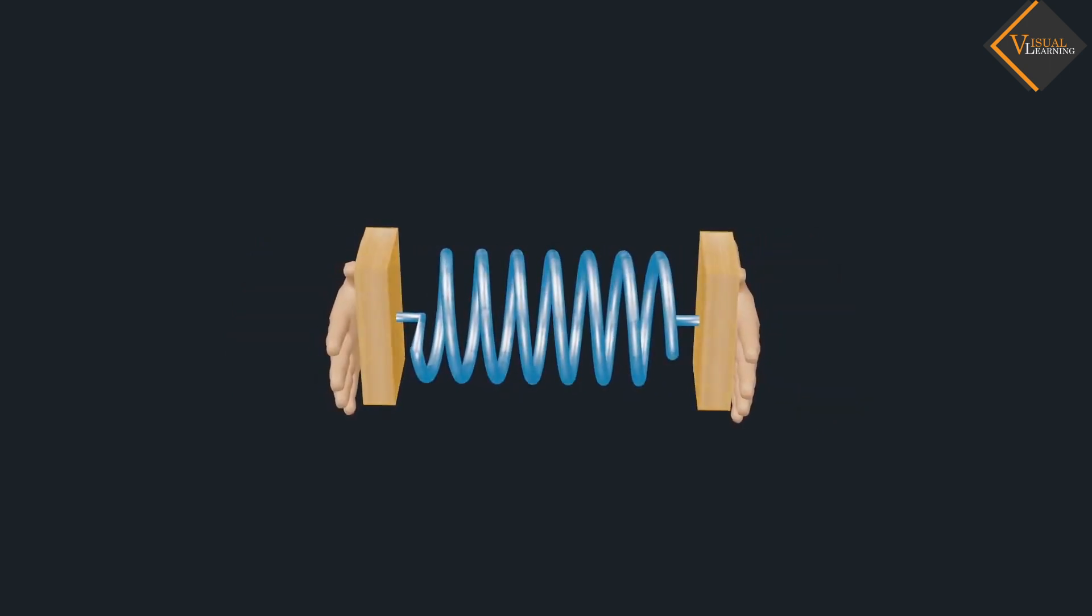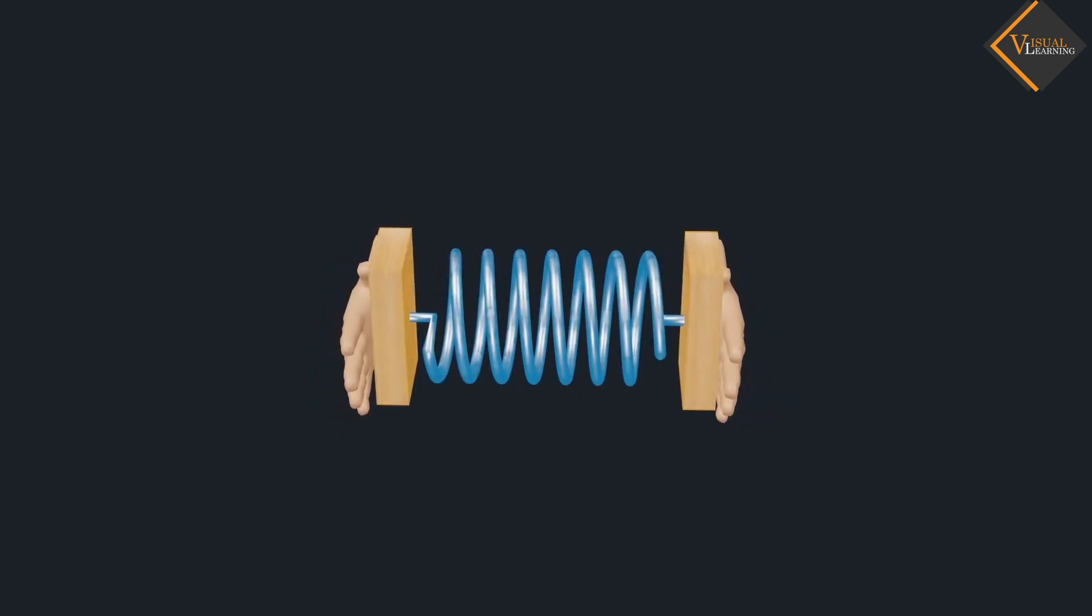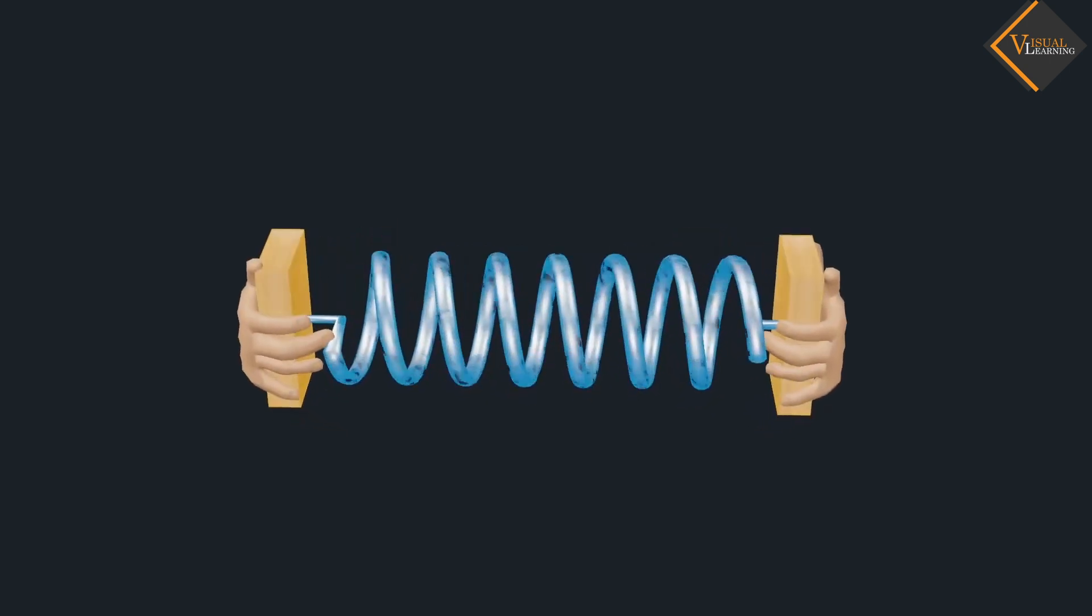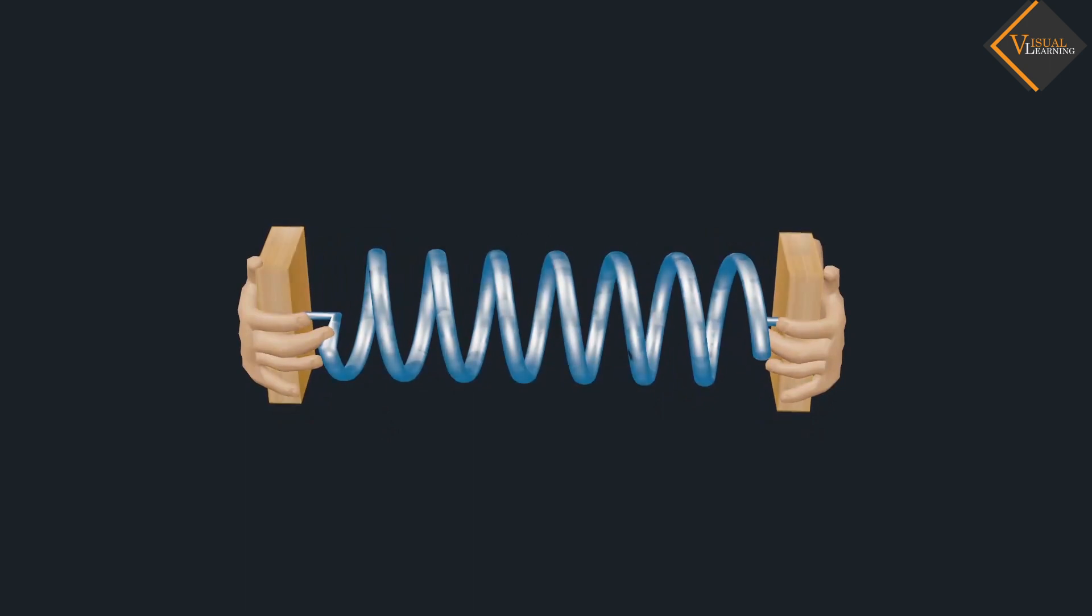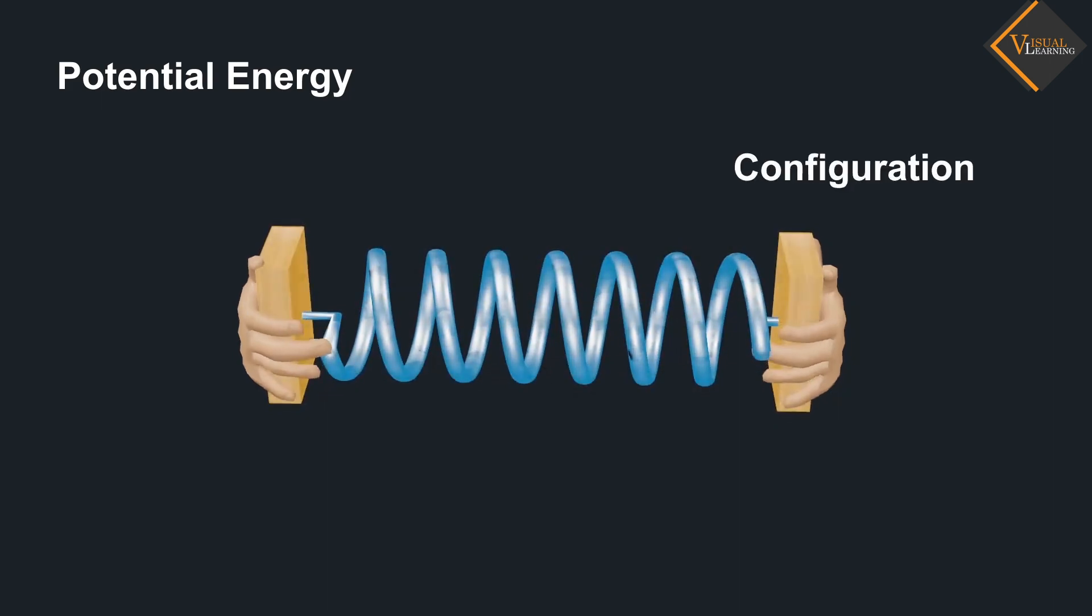When we apply force on the spring either by pressing or pulling its ends, the energy transferred to the spring is stored as potential energy. And this potential energy possessed by the object is the energy present in it by virtue of its configuration.